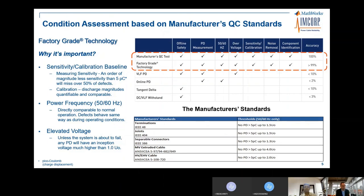But how do you do the same thing in the field? In the field, you don't have a Faraday cage or EMC chamber. You need equipment that excites the cable at 50 or 60 Hz, removes the noise, and can calibrate to the specific standards as manufacturers do. It is very important that the measurement is as close as possible to the actual operating conditions.